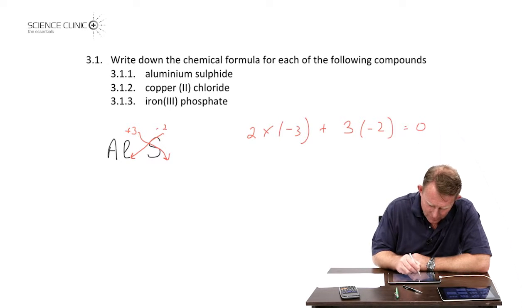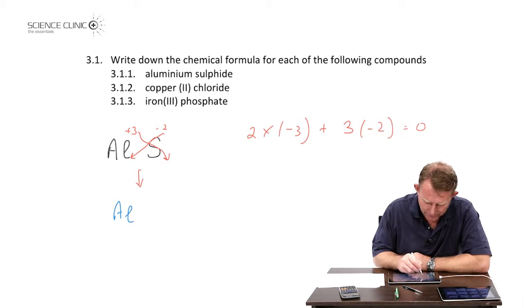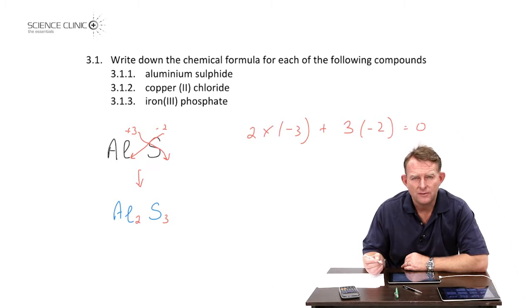So our final answer then would be aluminum - that's the metal first, always the positive ion - there's the sulfur. And now we write down just the numbers. It would be Al₂ and S₃. So that's the formula for aluminum sulfide.